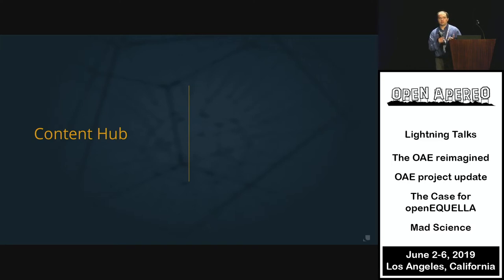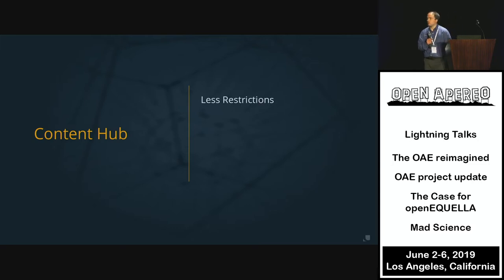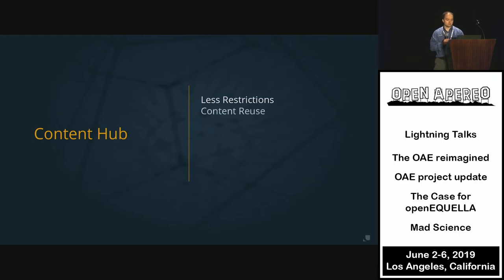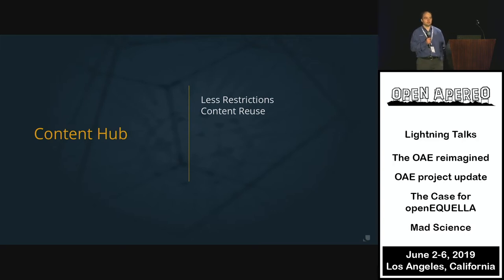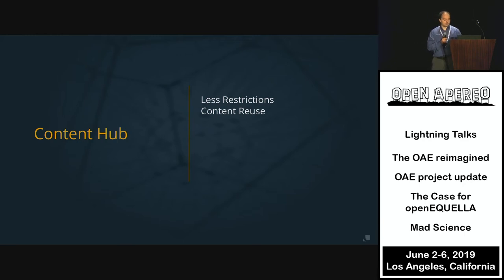So what do we really want in a content hub? We want less restrictions — we don't want the system to tell us what we have to do with the content; we want to tell the system where it should go. We want to be able to reuse our content. Content is interesting to create, and if you can't reuse it there was really no point. So you want to allow people to reuse it, remix it, and share it out.